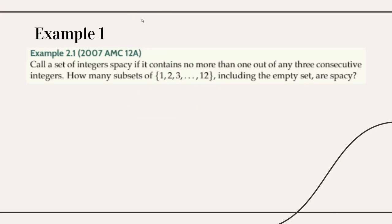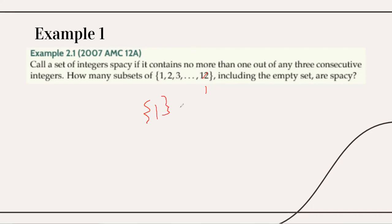The idea behind recursion is we basically take a smaller version of this problem. How can we make it smaller? We could replace 12 with 11, but we'd still have the same issue. So let's go all out and replace 12 with 1. We have the set {1}, and we want to find how many subsets contain no more than one out of any three consecutive integers. We basically just have 2: the empty set, and the subset containing just 1. So for n=1, the answer is 2.